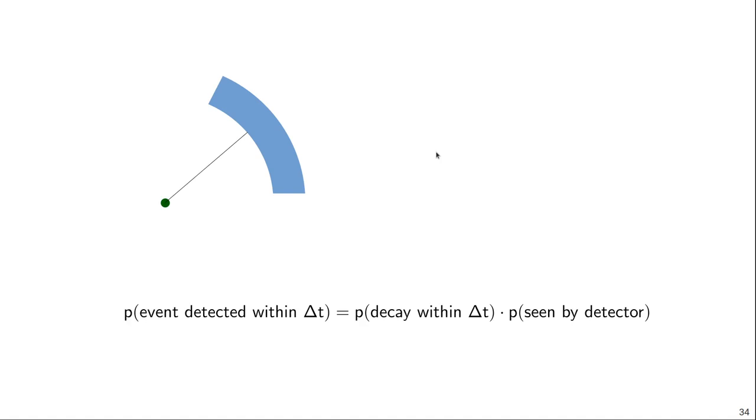So no gamma ray will be emitted. It can also happen that the decay occurs but the gamma ray gets emitted in a different direction — single gamma ray emission happens isotropically in all directions. And of course, it can happen that if you are lucky, the gamma ray gets emitted in the direction of the detector, and the detector actually sees and records the event.